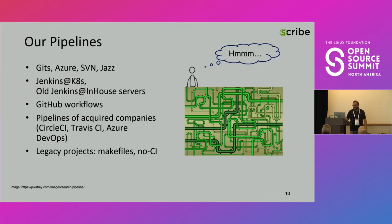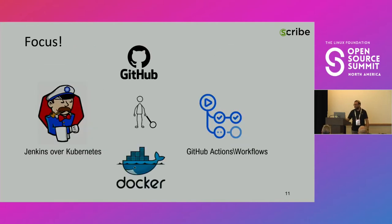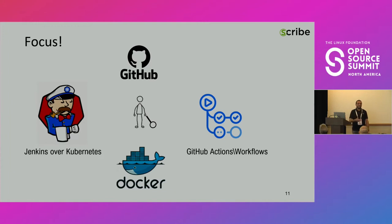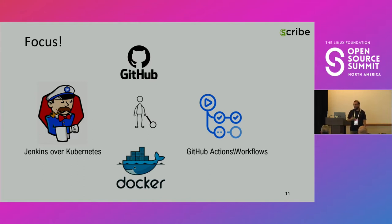As a DevSecOps guy that got a project, the first step was to focus, and I decided to focus on two main pipelines. Looking forward, Jenkins over Kubernetes is our main heavy-duty tool in-house, and we use GitHub and GitHub workflows as an emerging technology — convenient for subcontractors and small projects to handle before we integrate them into our Jenkins over Kubernetes main pipelines. And as source control, I would focus on GitHub and also focus on Dockerized applications, as they are more and more common in our imaginary company.